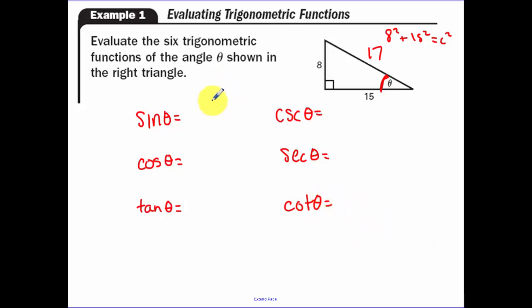So sine, opposite over hypotenuse, 8 over 17. Its reciprocal is 17 over 8, cosecant. Cosine, 15 over 17, adjacent over the hypotenuse. Secant, the reciprocal of that. Tangent, opposite over adjacent, 8 over 15. Cotangent is the reciprocal of that, 15 over 8.